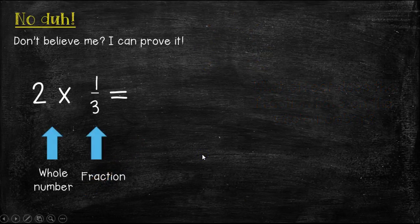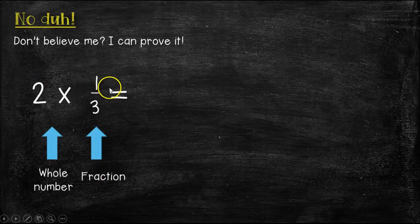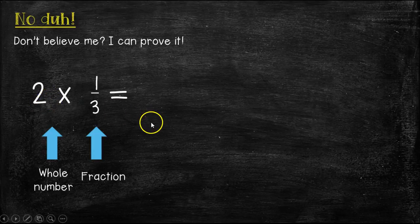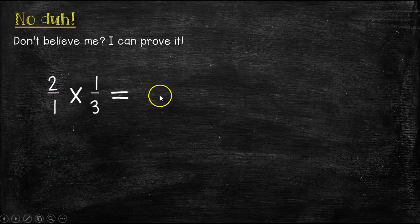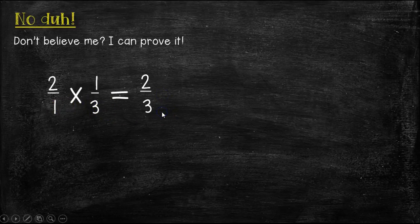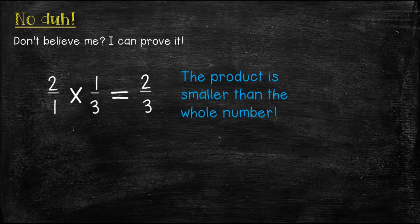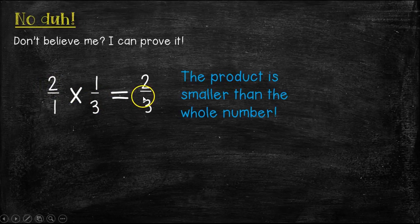So, let's try another one so I can prove it to you. Here we have 2 times 1/3, a whole number times a fraction. So, if what I said was true, our product is going to be smaller than the 2. Well, let's go ahead and multiply it out. 2 times 1 is 2. 1 times 3 is 3. Is 2/3 less than 2? That's right. The product is smaller than the whole number. Did I even have to do math? No, because what you wrote in your notes is, anytime you multiply a whole number by a fraction, the product will always be smaller or less than the whole number.